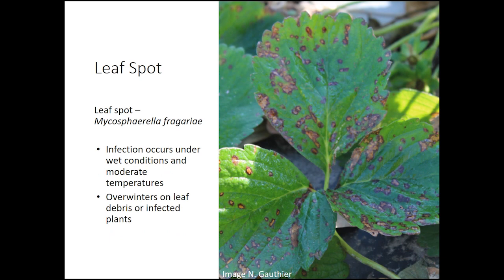Common leaf spot infections occur under wet conditions and moderate temperatures, which is the case with most fungal infections. The pathogen overwinters in leaf debris or on infected plants, so it's primarily a problem in perennial systems or if plants are not removed from beds in an annual system.